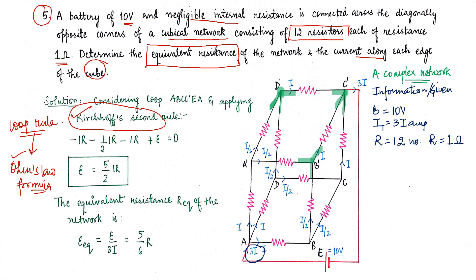By the application of Kirchhoff's junction rule, the total current 3i is equally divided into three arms — i, i, and i. At junction A', again by the junction rule, the current is divided equally into two directions, giving i/2 and i/2. This diagram requires you to imagine how the current flows through each arm of the cube network.